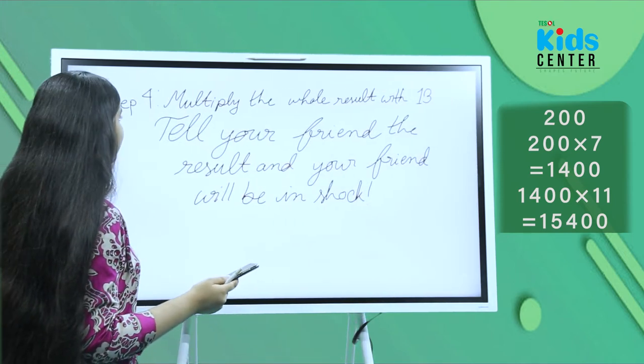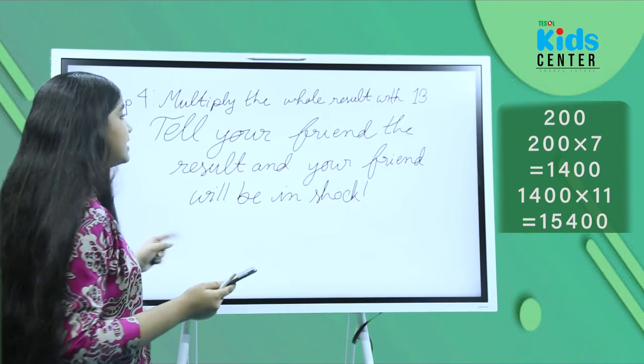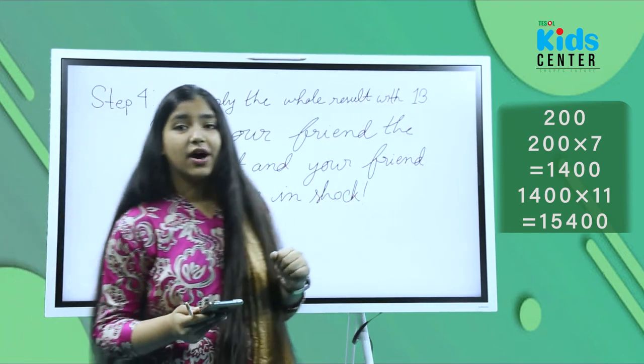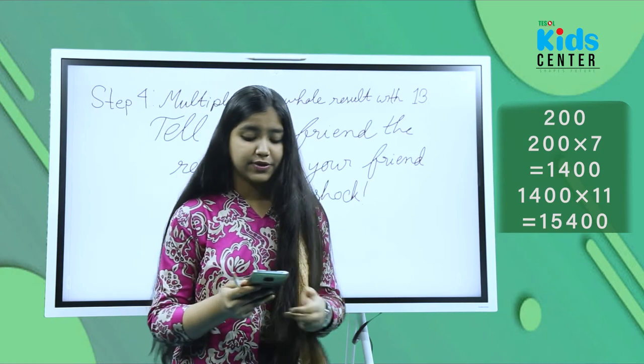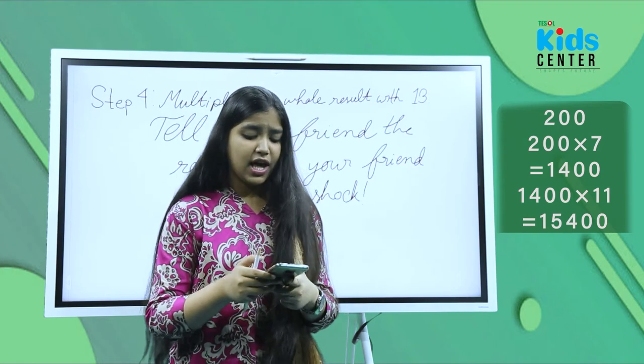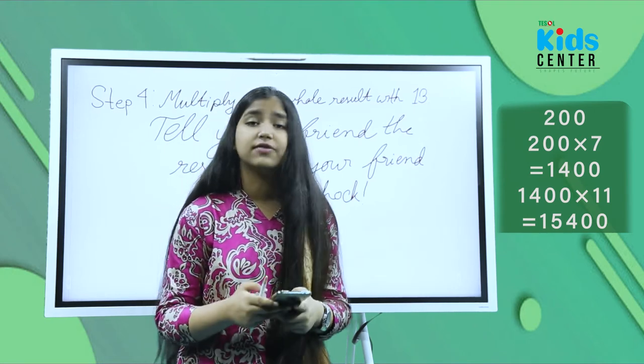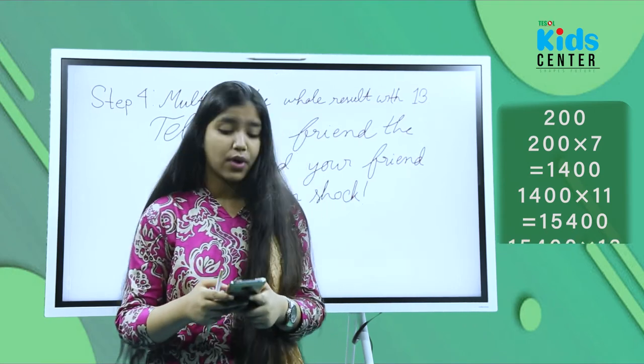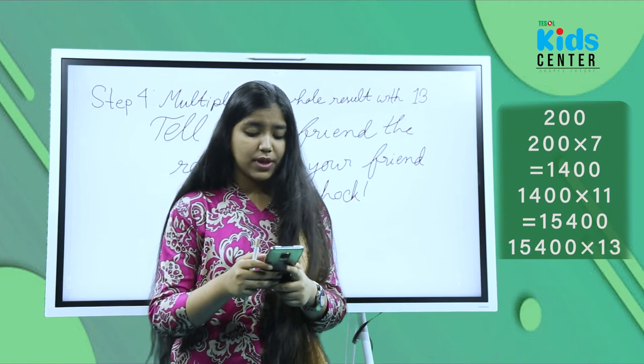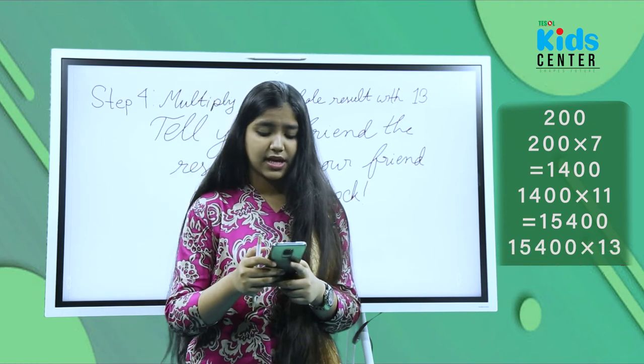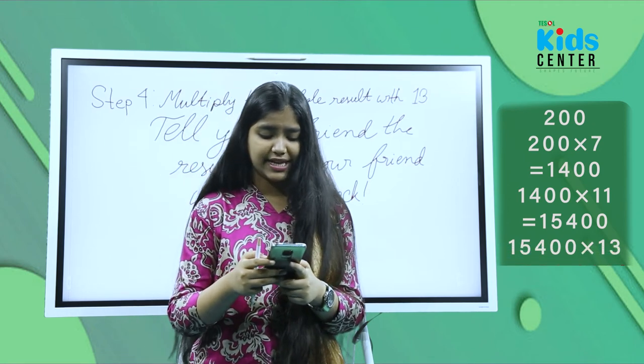Step four: multiply the whole result by 13. So we take 15,400 and multiply it by 13.